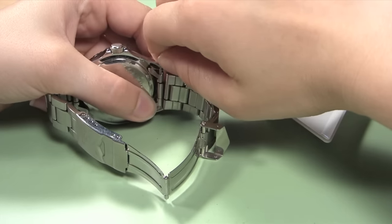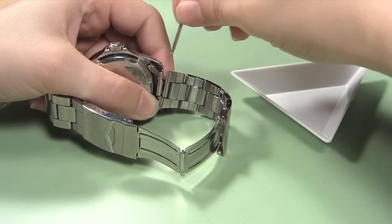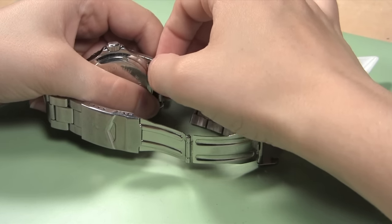As you pull it free, the end piece will slip out of the watch case and fall loose from the watch band. Place the spring bar and end piece in your parts tray to keep them safe in case you need to reuse them.